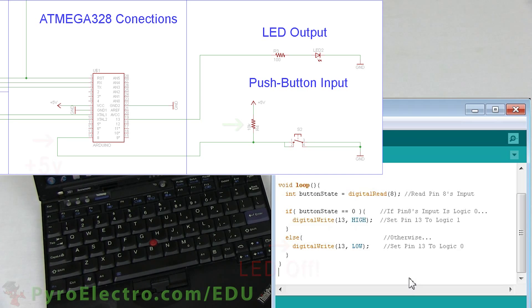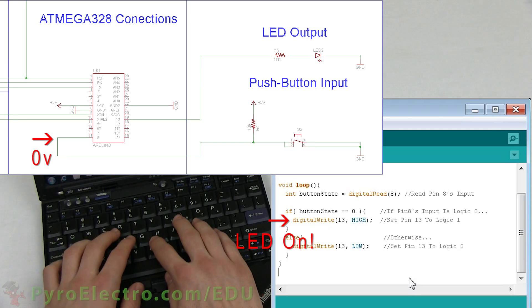When the push button is pressed down, however, pin 8 sees 0 volts or logic 0. Looking again at our software, you can see that when button state is logic 0, the LED should be turned on.